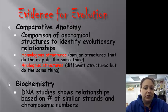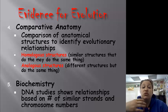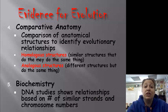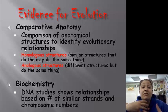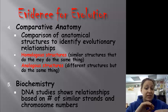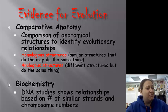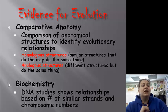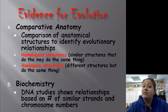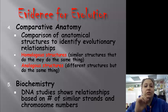More evidence for evolution: comparative anatomy — comparing the anatomy of different organisms to identify evolutionary relationships. Homologous structures have similar structures that may or may not do the same thing. Homo means the same. Then we have analogous structures — they're different structures, but they do the same thing; they have the same function.